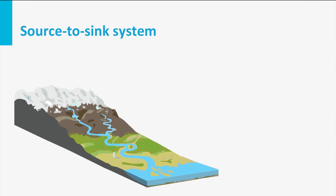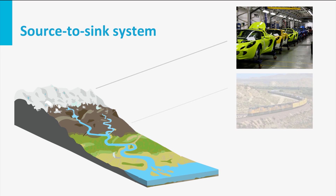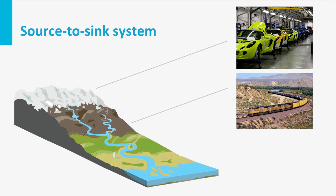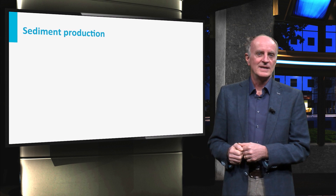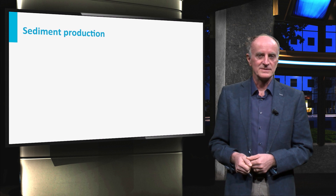The source to sink system works somewhat like the economy. The source is comparable to the factory, where the goods are produced. These are the sediments in our case. The sediments are then transported by different means and eventually will reach the market, which in our sedimentary system is called the sink. Let us look first at how sediments are produced.